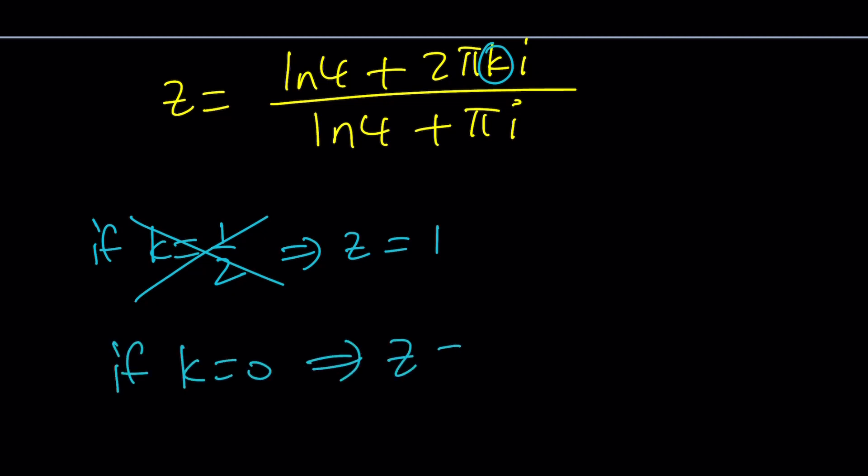then we get z equals ln 4 over ln 4 plus pi i. Obviously, we can go ahead and rationalize the denominator. Wait, did I say rationalize? I mean, multiply by the conjugate. That's what I meant. These are not radicals or reals.